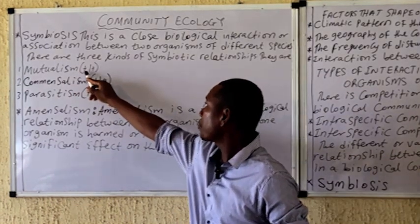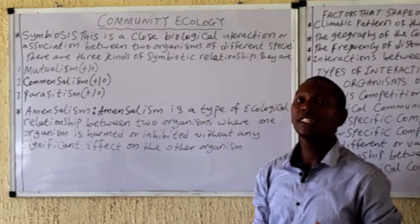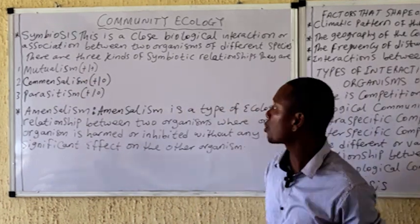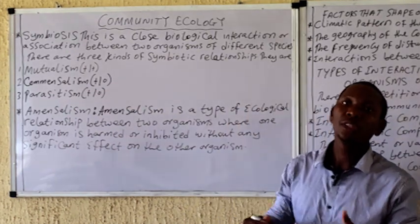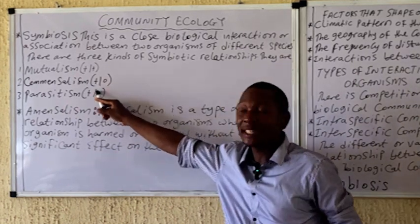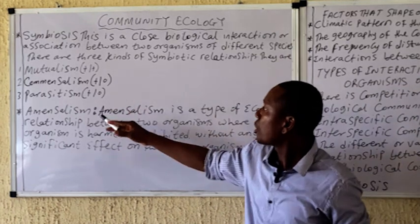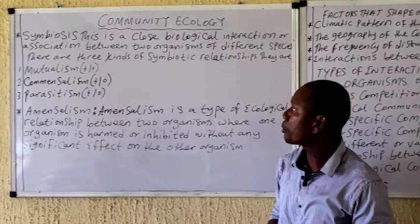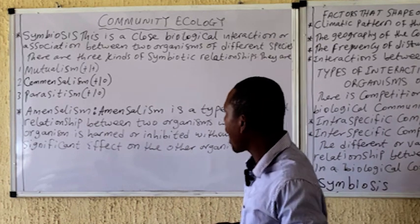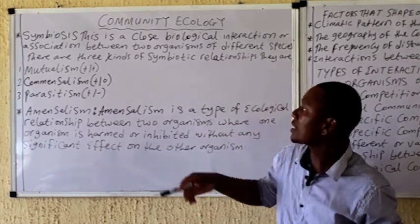We have two main types of symbiotic relationship. Mutualism, indicated by two positive signs, is an association between two organisms of different species in which both benefit. Commensalism is a symbiotic association between organisms of different species in which one is benefiting and the other is unaffected — indicated by a positive and a zero sign. Parasitism is an association between two organisms of different species in which one is benefiting and the other is being harmed — indicated by a positive and a negative sign.